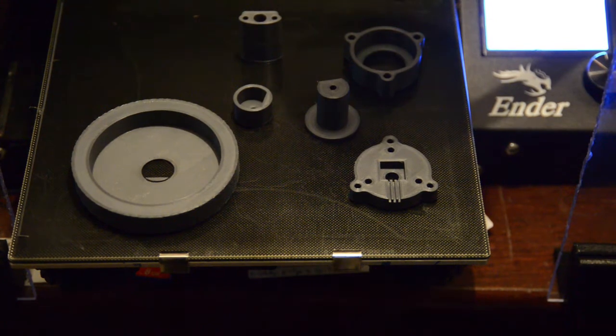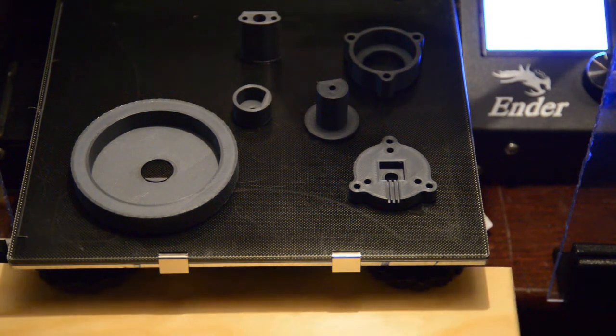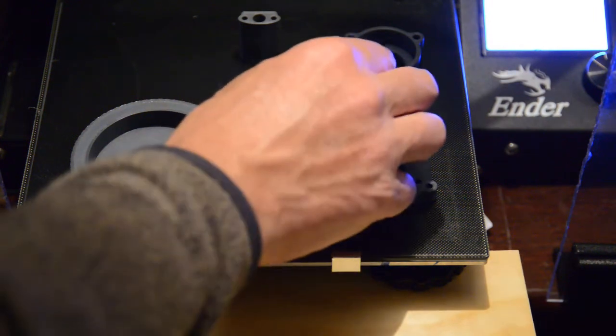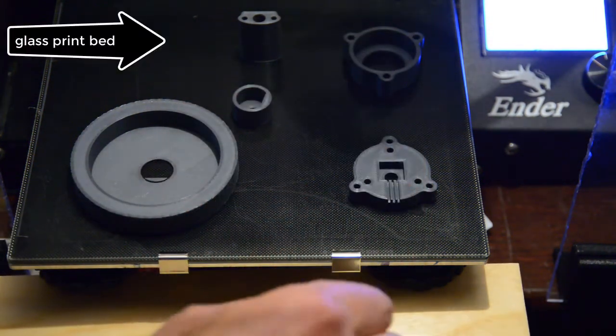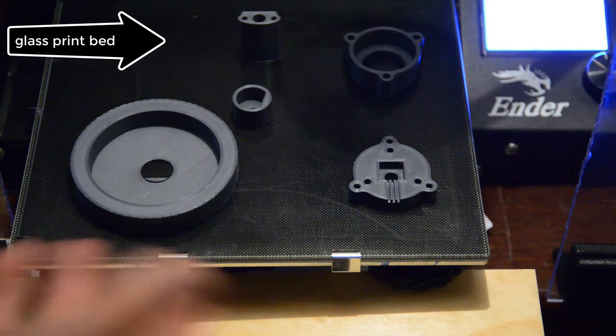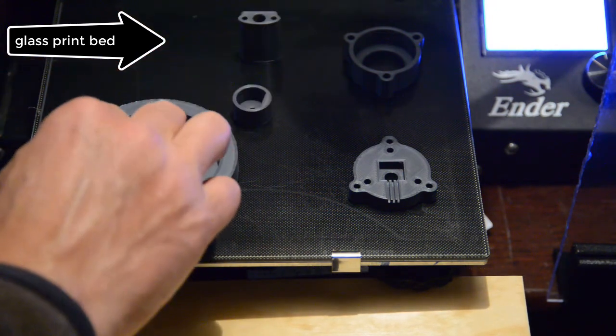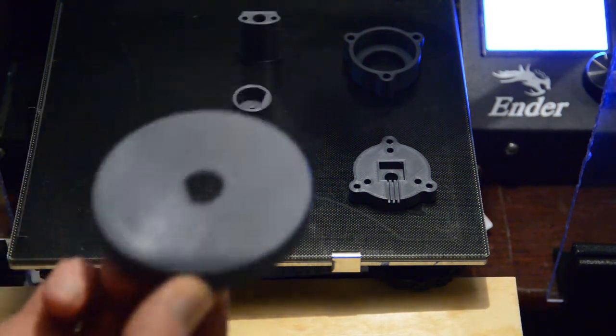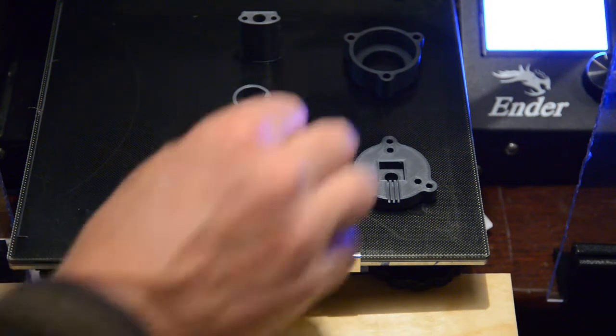Well, here we go. Hot off the printer. These things pop straight off. They are printed without any rim on a glass bed, and if you're careful not to touch anything, off they come.